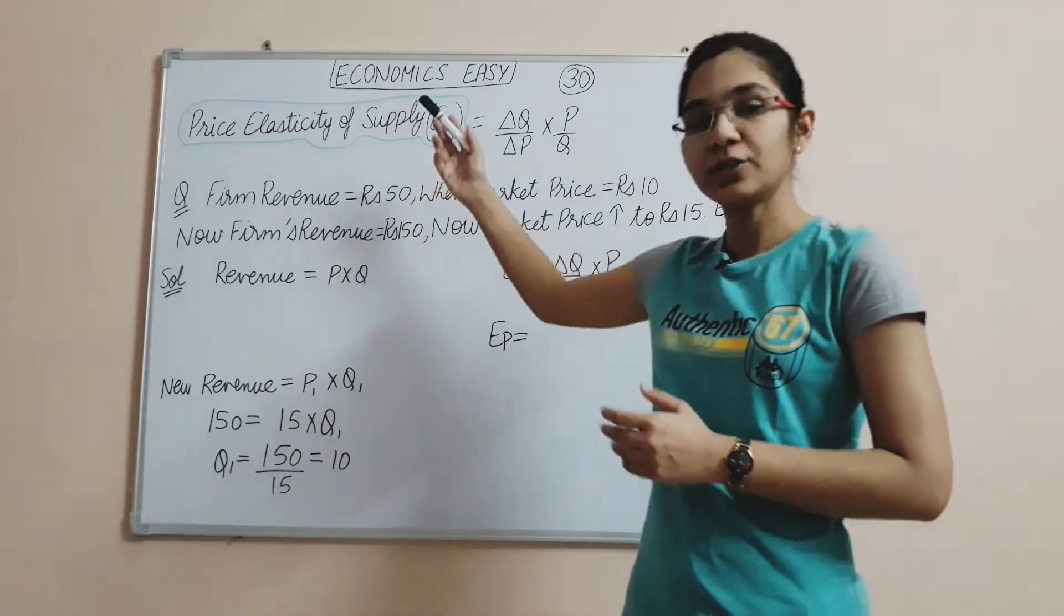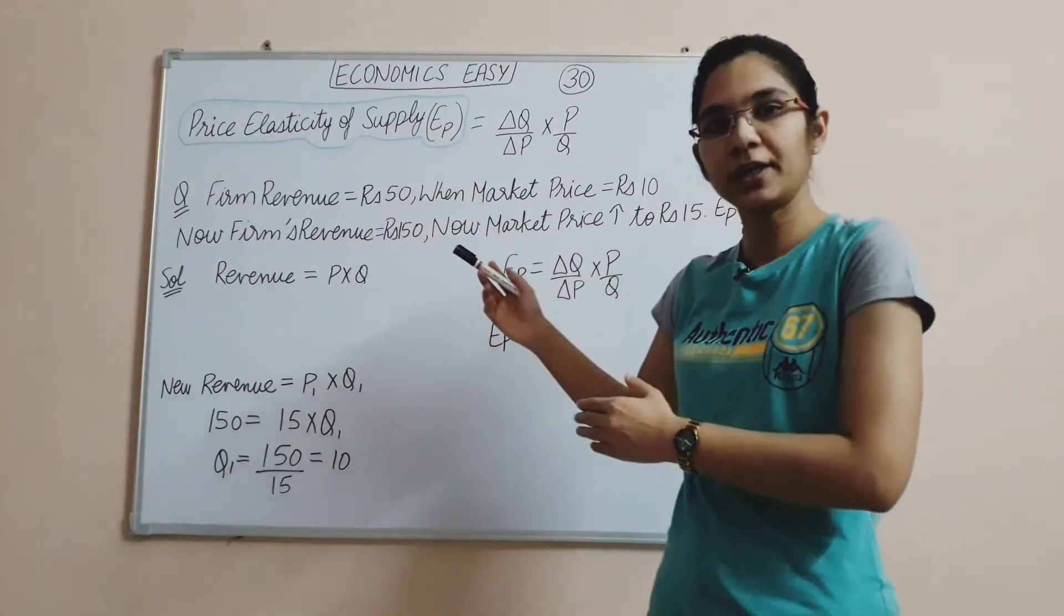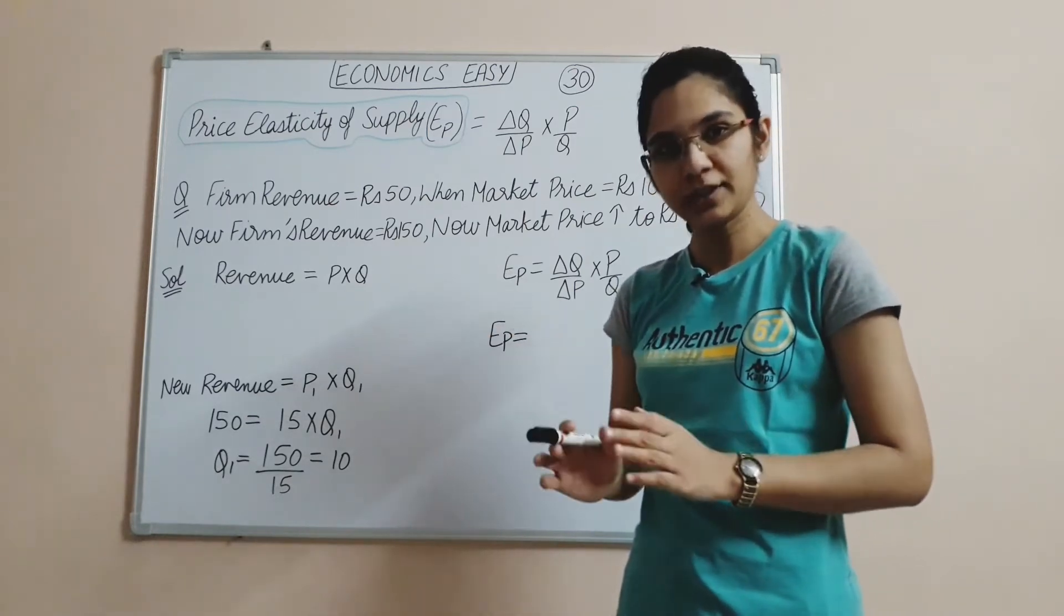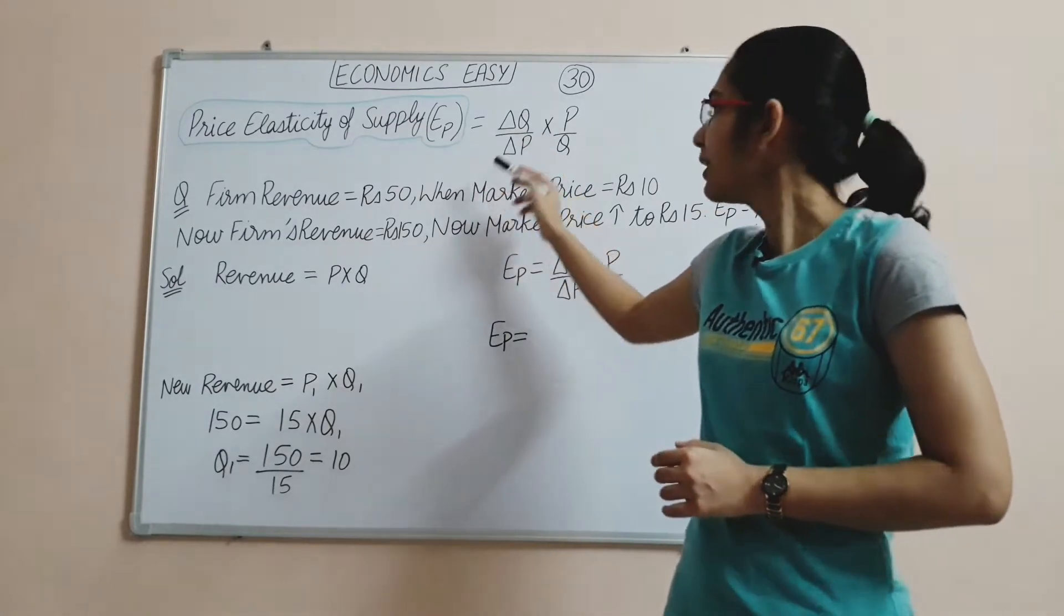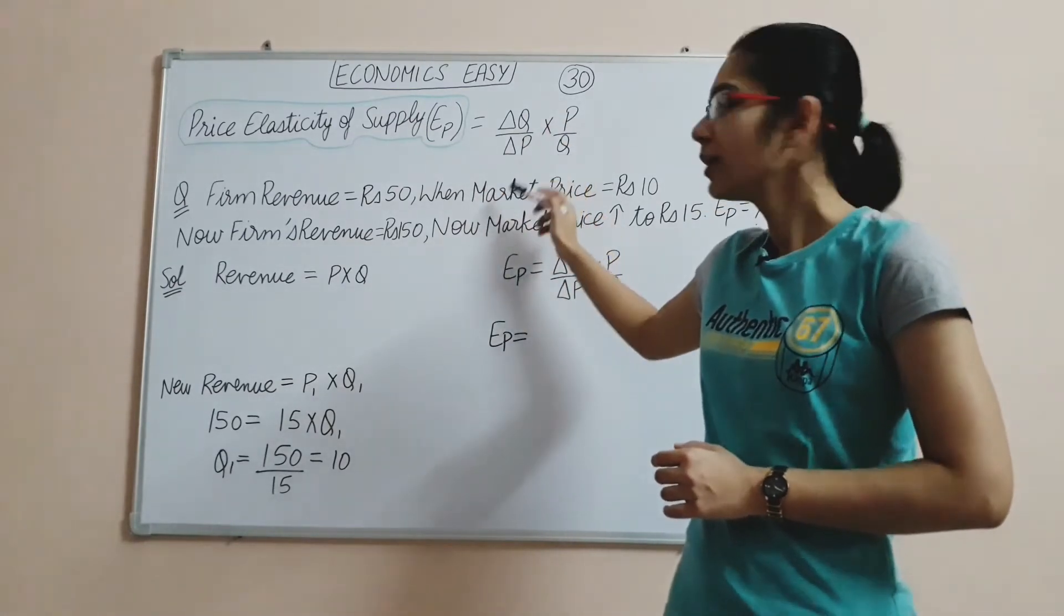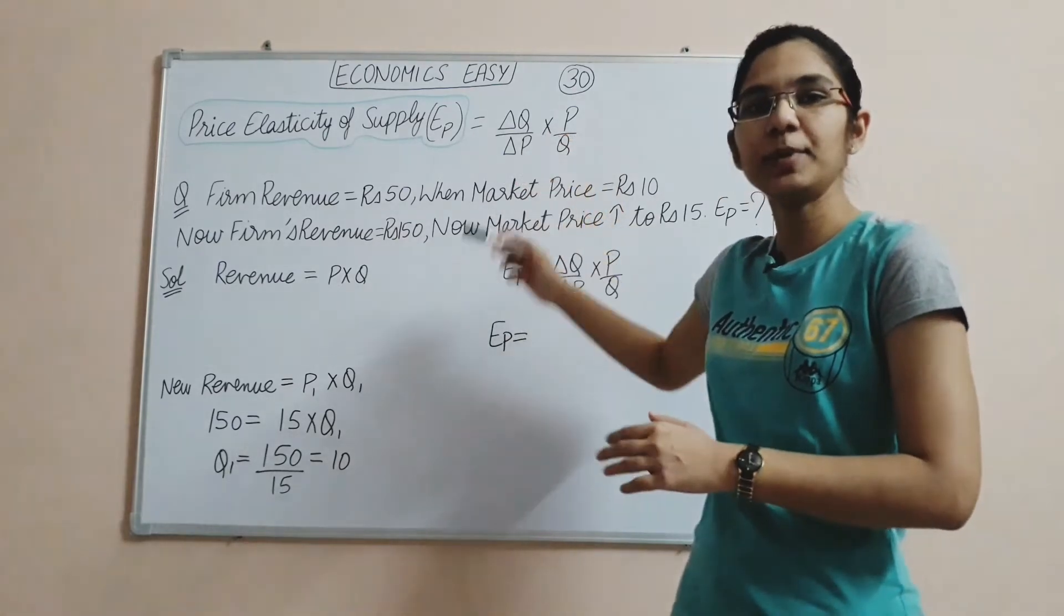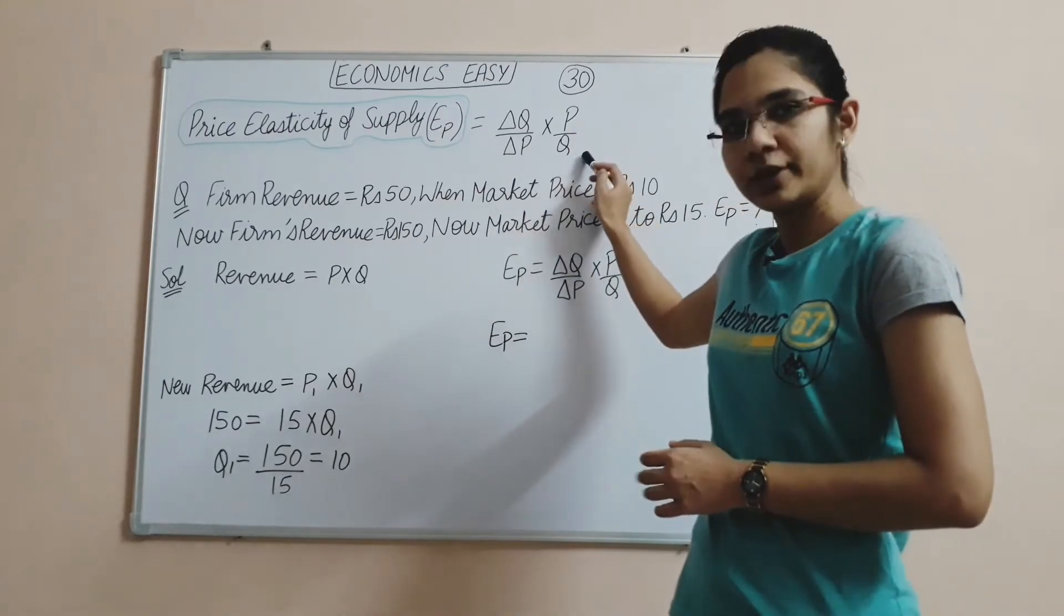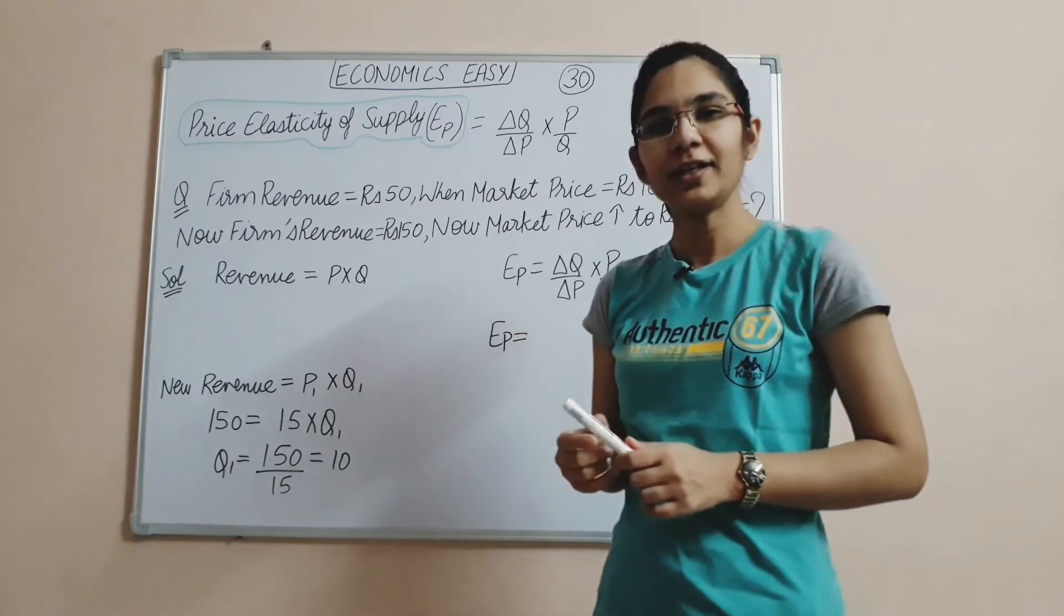Let's see the Price Elasticity of Supply formula. In the first video we saw this formula. Price Elasticity of Supply equals percentage change in quantity supplied upon percentage change in price. We can also write this as: change in quantity upon change in P, times P upon Q. Change in quantity means the difference in quantity. Change in P means the difference in price. We need original price and original quantity.